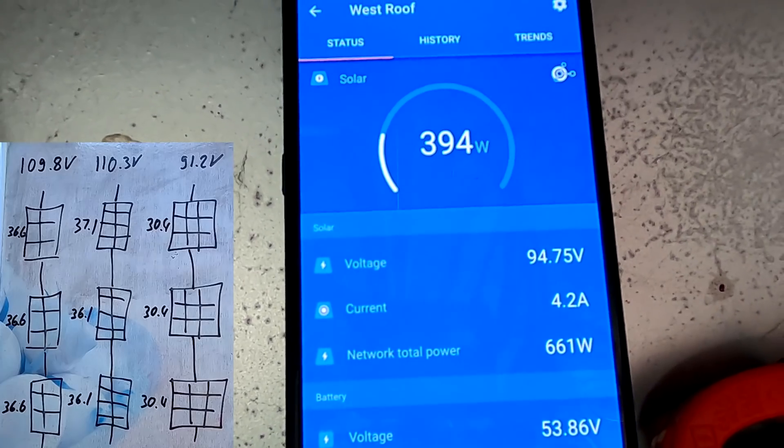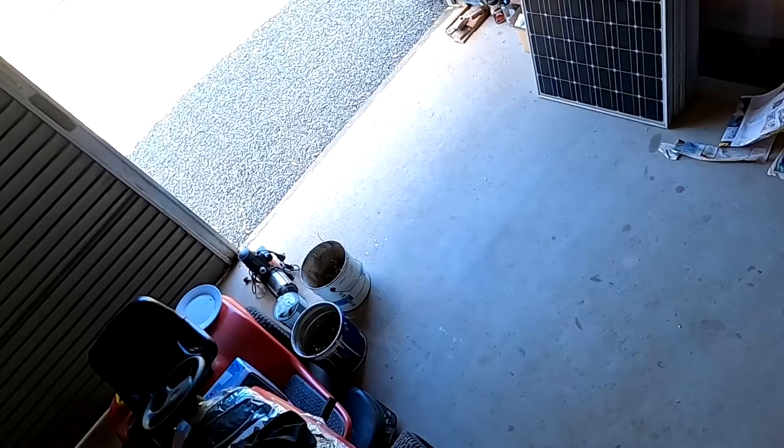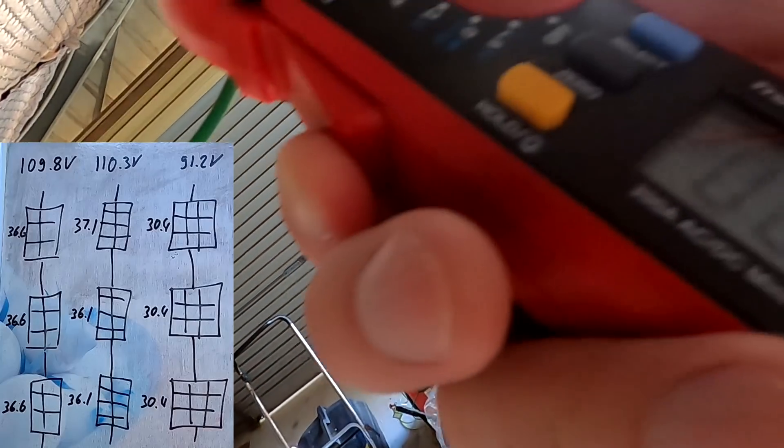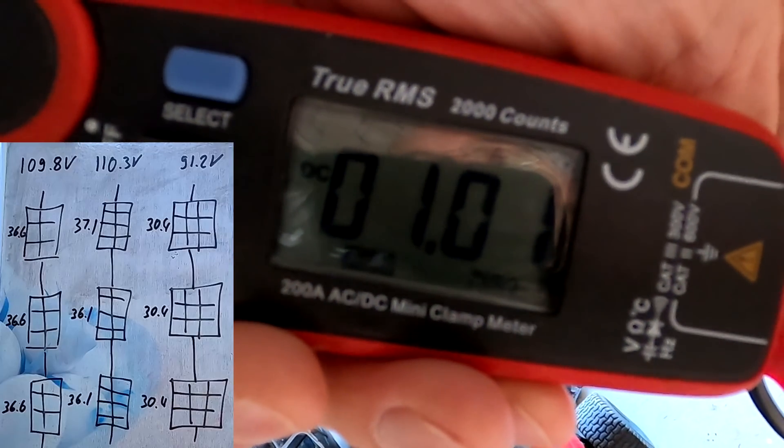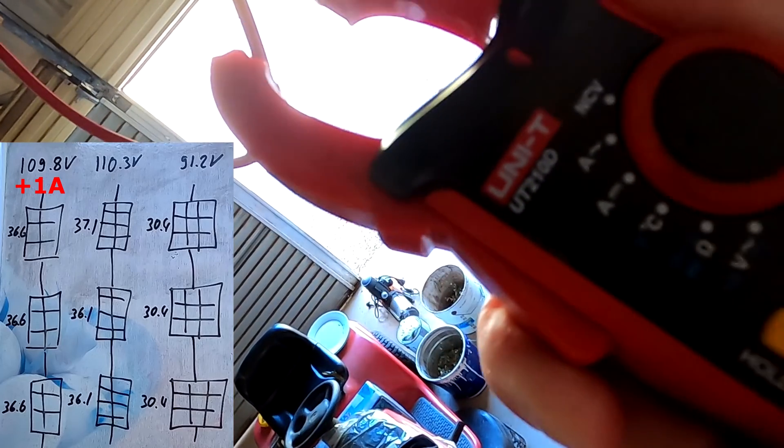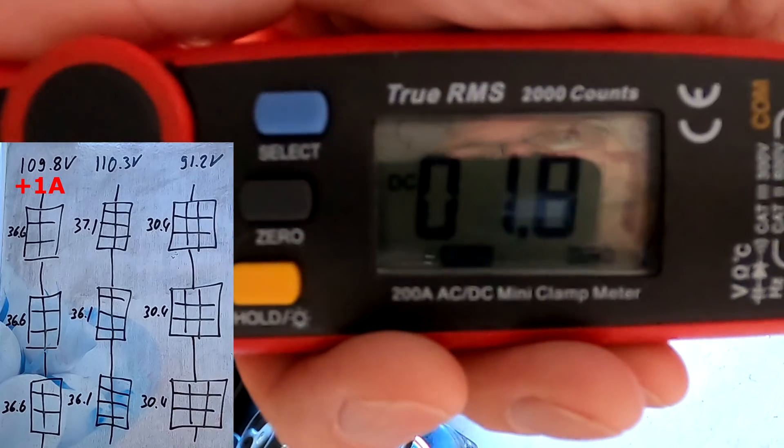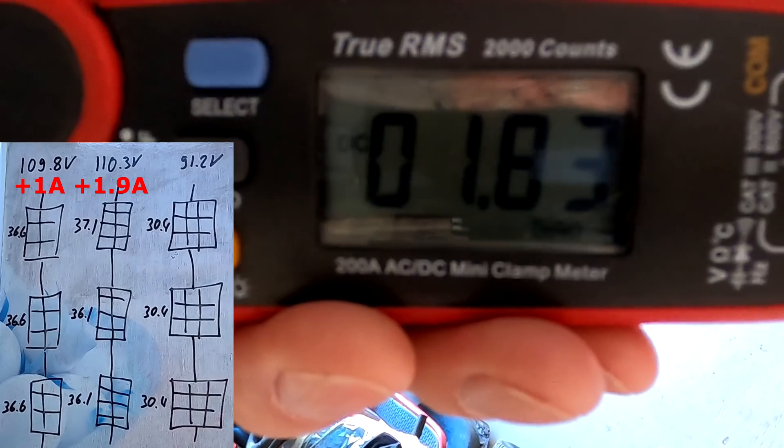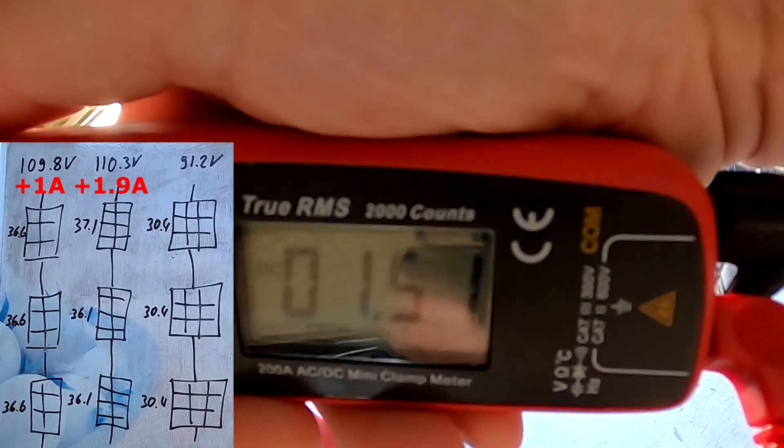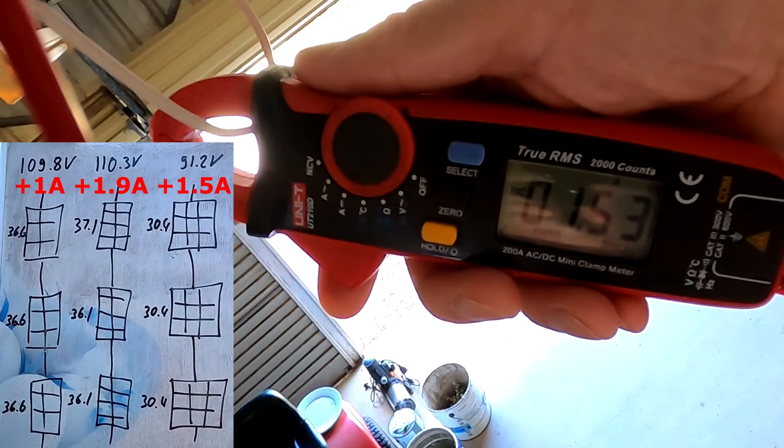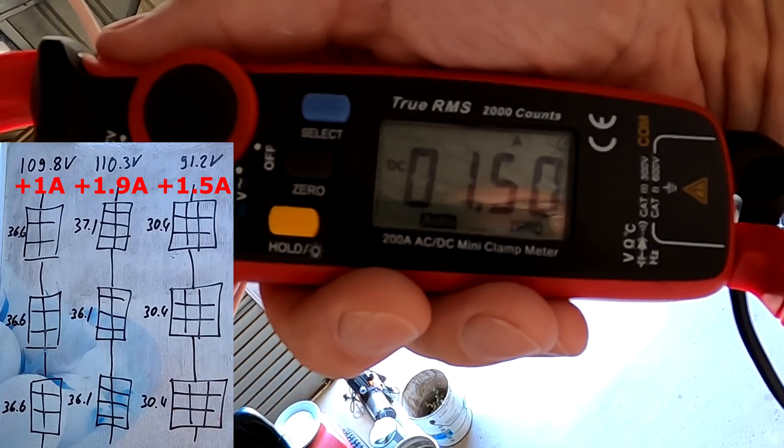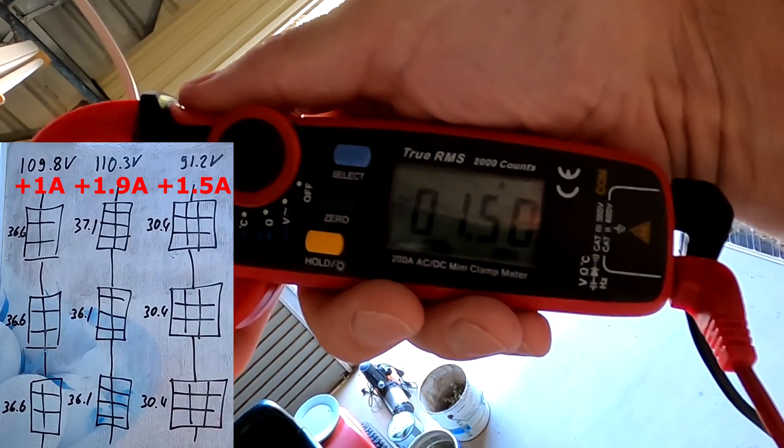There we go, 4.1 amps out of all three strings together. Let's measure some current for these three strings. Start with the left one again, this is our Suntech panel, one amp coming from there. The middle one is the Renee Solar and TNS, 1.8 amps, less shading obviously. The third one is the 250 watt panels from BLD, 1.5 amps. We can see there's no negative symbol in any of the currents here, so all of these three strings are pushing power towards the solar charge controller.